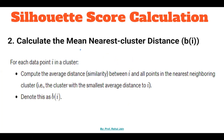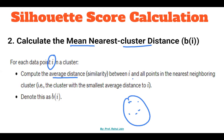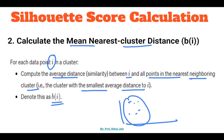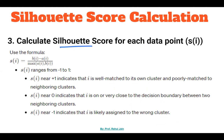The second step is to calculate the mean nearest cluster distance. For each data point i in a cluster, we calculate the average distance between i and all points in the nearest neighboring cluster — that is, the cluster with the smallest average distance to i. We represent this as b(i). We calculate the average distance between data point i and all other points in the nearest neighboring cluster.